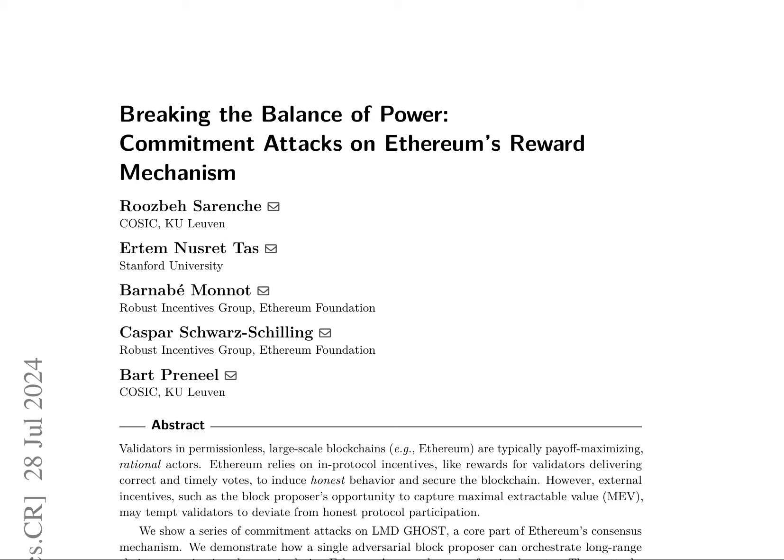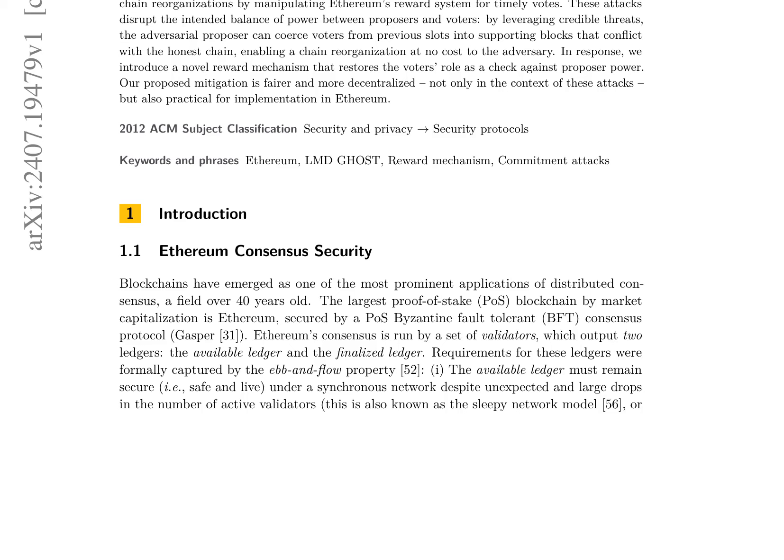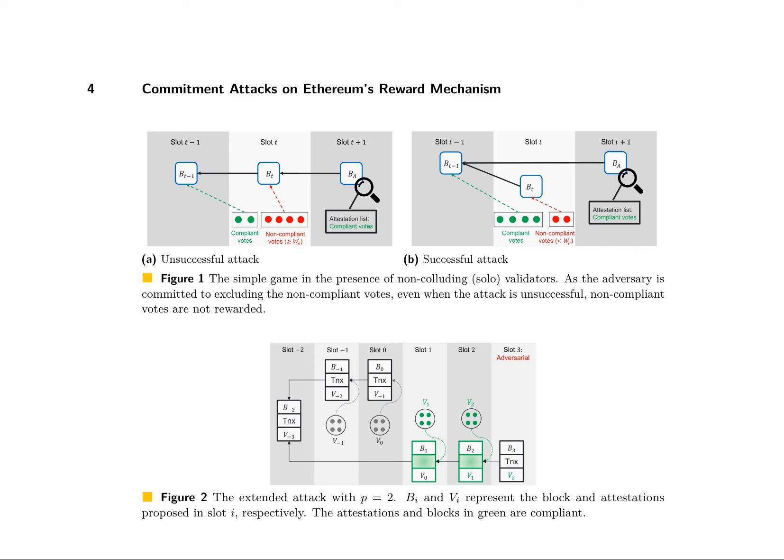In the context of Ethereum's permissionless blockchain, validators are incentivized to act rationally, but external incentives like MEV can tempt them to deviate from honest protocol participation. The authors demonstrate commitment attacks on LMD Ghost, a core part of Ethereum's consensus mechanism, which can disrupt the intended balance of power between proposers and voters. These attacks exploit the head vote reward mechanism in the presence of rational attestors, requiring no control over the network or large stake.